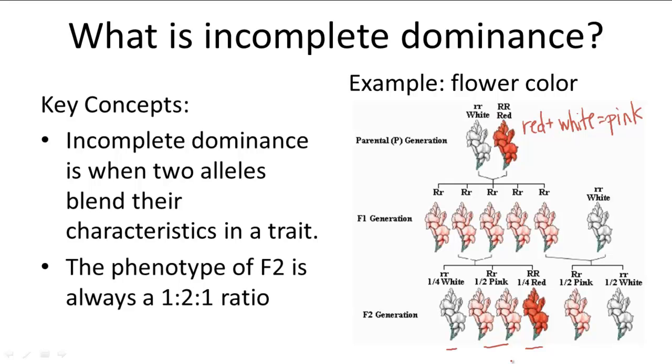Don't get codominance and incomplete dominance confused. Codominance is when both alleles show but stay separate like a white and red cow. Incomplete dominance is when both alleles show but are blended together like a pink flower.